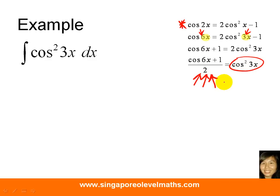With this manipulation, we can now answer the question. Let's take a look at the step by step. I replace cosine square 3x with cosine 6x plus 1 over 2. That is what I get from the double angle formula.